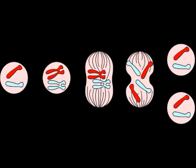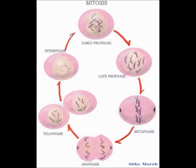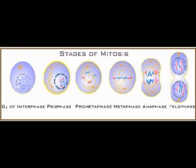Mitosis is the division of the nucleus. The daughter cell is a copy of the parent cell. There's interphase, then prophase, then metaphase, then anaphase. The last phase is telophase. The chromosomes become visible and the spindle fibers pull the chromatids to the separate poles.